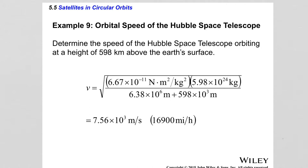Example: Determine the speed of the Hubble Space Telescope orbiting at 598 km above Earth's surface. V = √(G × M_Earth / r), where r = 598 × 10³ m + 6.38 × 10⁶ m. Substituting G = 6.67 × 10⁻¹¹ N·m²/kg² and M_Earth = 5.98 × 10²⁴ kg gives V = 7.56 × 10³ m/s, or 16,900 miles per hour. The speed is not dependent on the mass of the satellite.